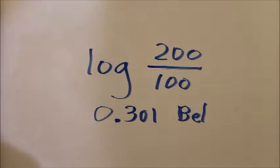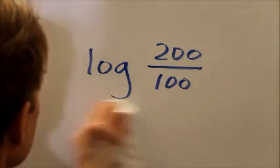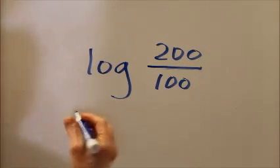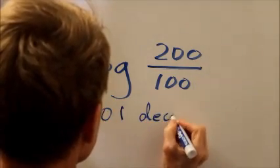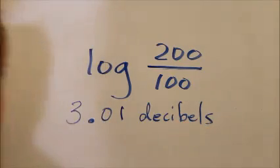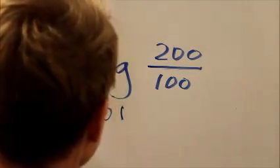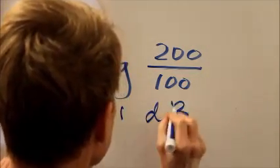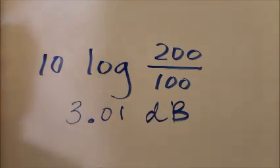But to define decibels, remember, a decibel is a tenth of a bell, so this must be 3.01 decibels. Decibel is commonly abbreviated dB, small d, capital B. But we need to multiply this here by ten in order to get decibels. So here's the general formula.